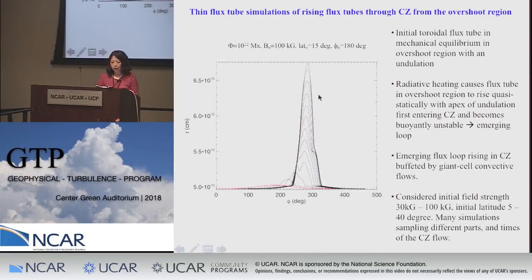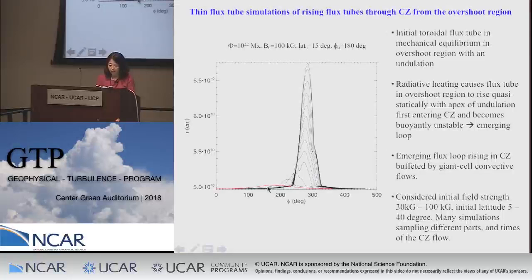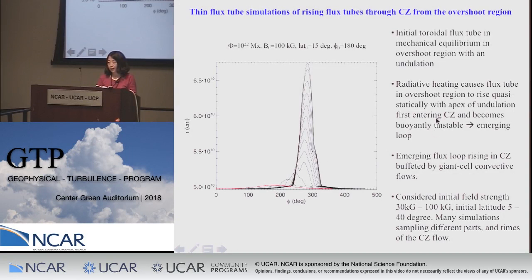More recently, we carried out thin flux tube simulations of rising flux tubes originating from initial equilibrium toroidal flux tubes stored in the stable overshoot region. We start with these toroidal flux tubes in neutral buoyancy and mechanical equilibrium with an undulation present, so that the apex has approached the bottom of the convection zone. Radiative heating causes the flux tube to drift upwards quasi-statically through the stable layer, with the apex first entering the unstably stratified convection zone, becoming buoyantly unstable, and forming emerging loops that rise through the convection zone impacted by the external convective flow field computed from ASH.